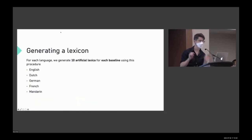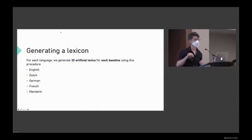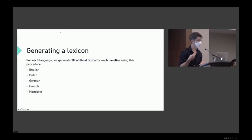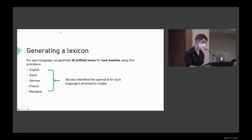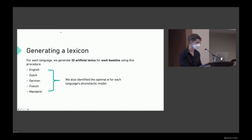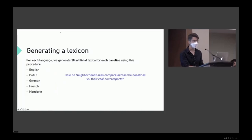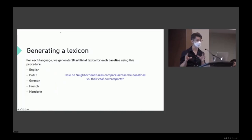For each language, we generate 10 artificial lexica for each of the three baseline types — neutral, anti-homophone, and anti-homophone-plus models — across five different languages, and identify the optimal N for each language's phonotactic model. We then ask how neighborhood sizes compare across the different baselines versus their real counterparts, measuring average neighborhood size — the mean number of minimal pairs across all words.